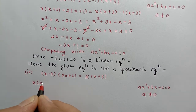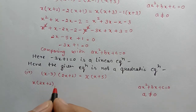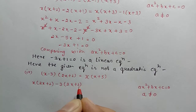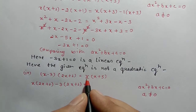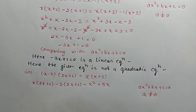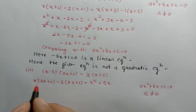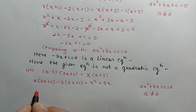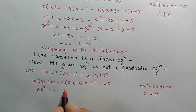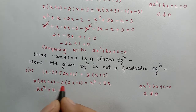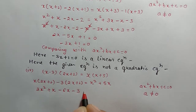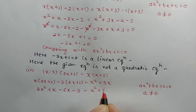x will multiply the complete bracket (2x + 1), and minus 3 will multiply (2x + 1) on the left side. So: x times 2x gives 2x², x times 1 gives x. Minus 3 times 2x gives minus 6x, minus 3 times 1 gives minus 3. On the right side: x times x gives x², x times 5 gives 5x. So right side equals x² + 5x.